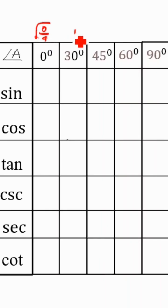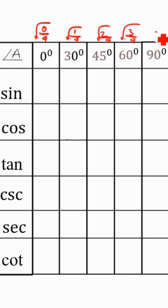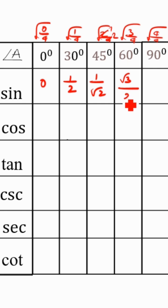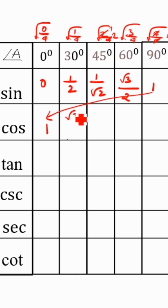0 by 4 root, 1 by 4 root, 2 by 4 root, 3 by 4 root, 4 by 4 root. 0 by 4 is 0, 1 by 4 is 1 by 2, 2 by 4 is 1 by 2. Root 3 by 4: since 4 means 2 into 2, you can take the 2 outside — 4 and 4 cancel. Root 1 is equal to 1. Root 3 by 2 comes this side, 1 by root 2, 1 by 2 goes this way.